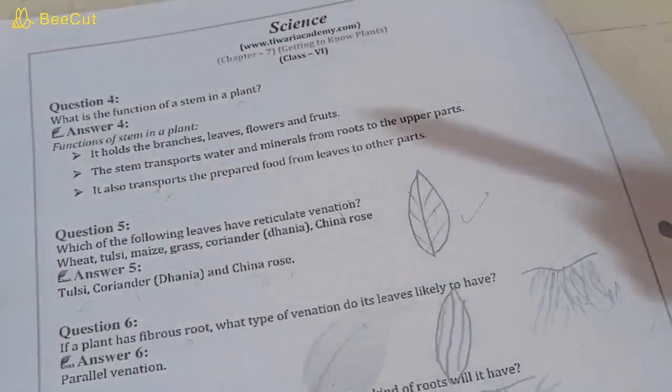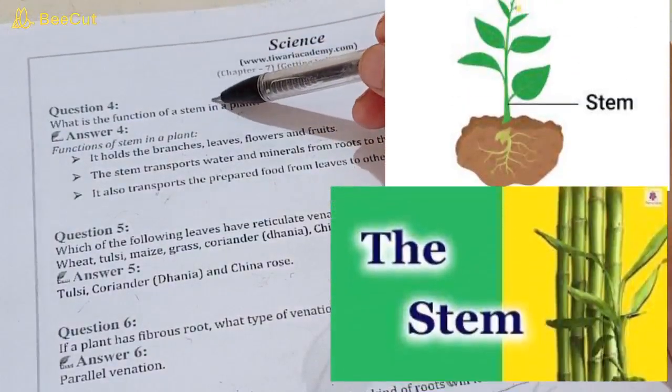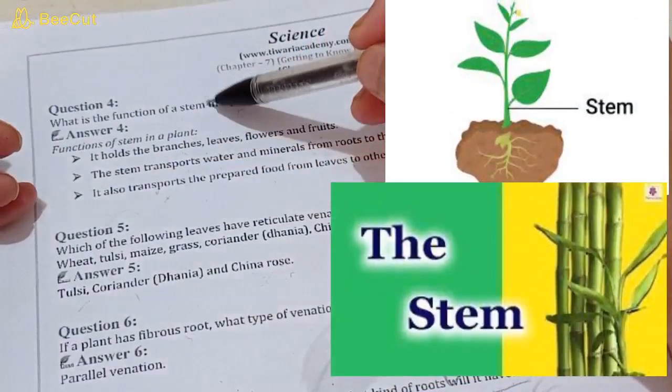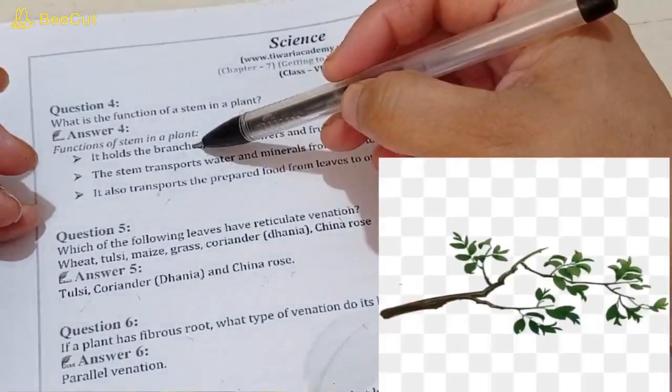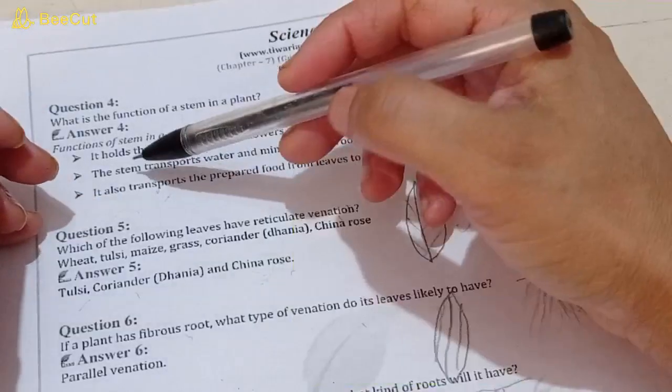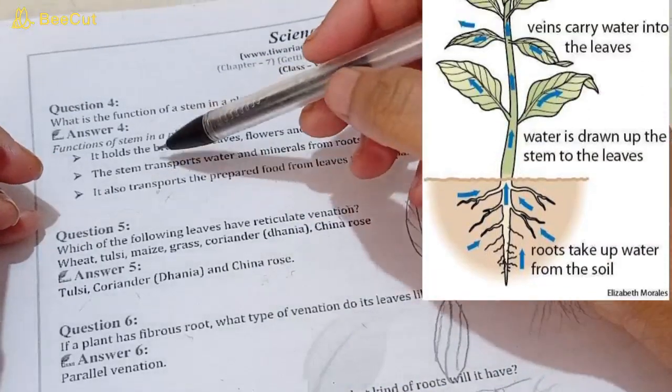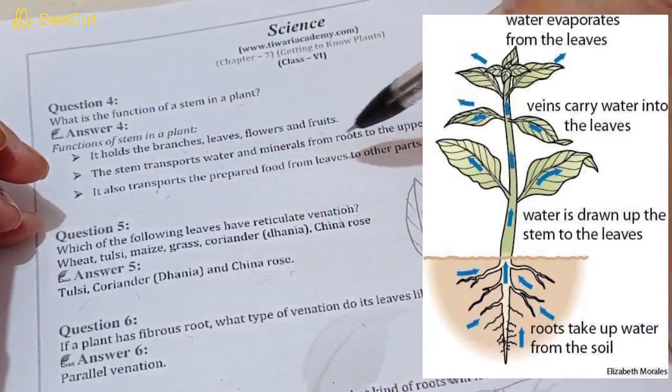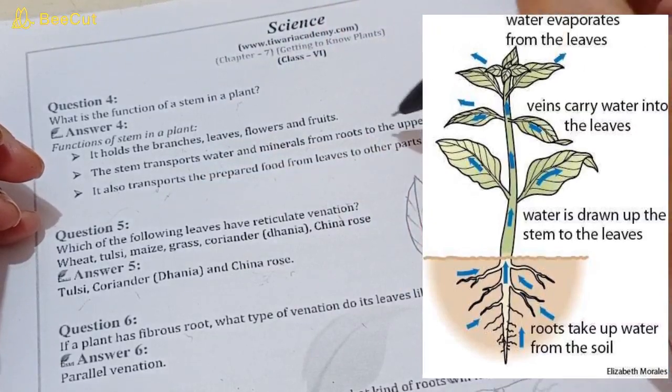Question number four: what is the function of a stem in a plant? The function of a stem in a plant is it holds the branches, leaves, flowers and fruits. It holds the branches, leaves, flowers and fruits. The stem transports water and minerals from roots to the upper part. It carries water and minerals from roots to the rest of the plant parts.